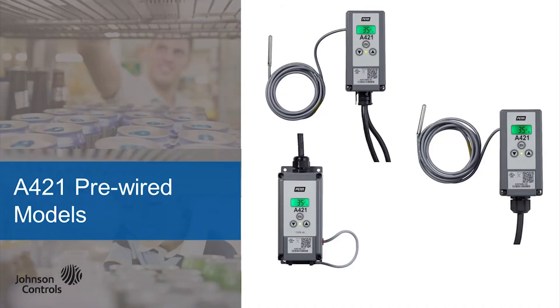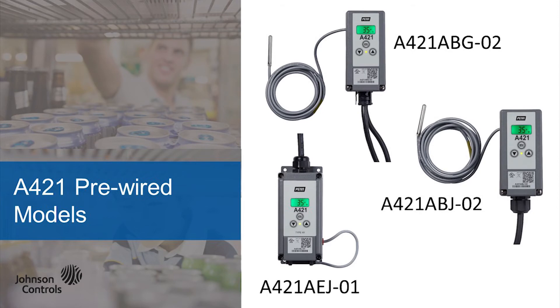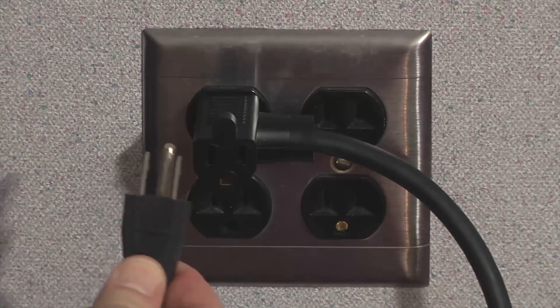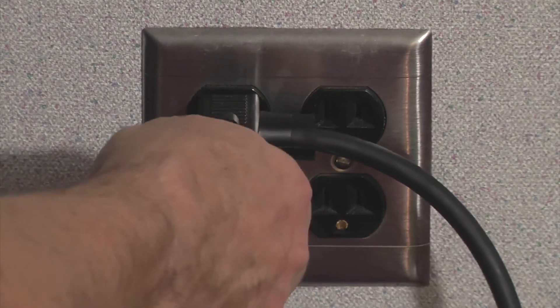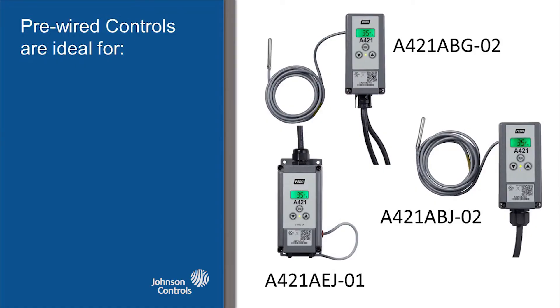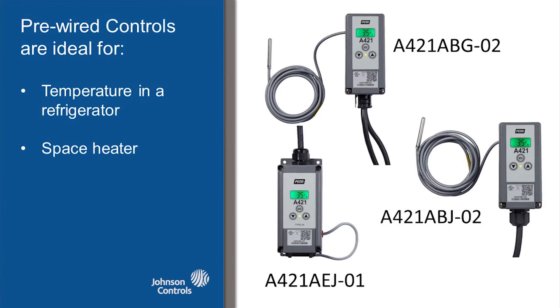For simple installations, there are also controls that come pre-wired with power cords. The A421 ABG, the A421 ABJ, and the A421 AEJ are the models in this family. With these corded models, simply plug the male end into a standard 120 VAC outlet, then plug the load you want to control into the female cord and the relay will cycle power to the device based on the temperature profile. These pre-wired controls are ideal for controlling the temperature in a refrigerator, a space heater, and even warming sidewalks and driveways if the temperature falls below the freezing point. As you can see, the new A421 control offers a variety of new models that can meet nearly every application for you and your customers.